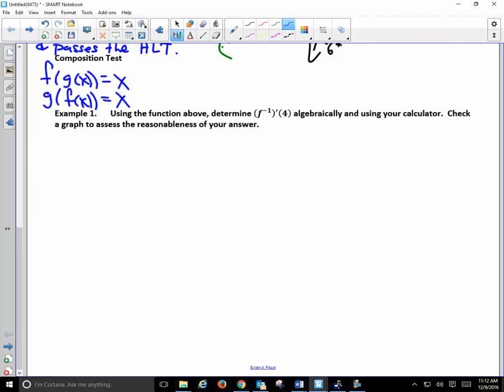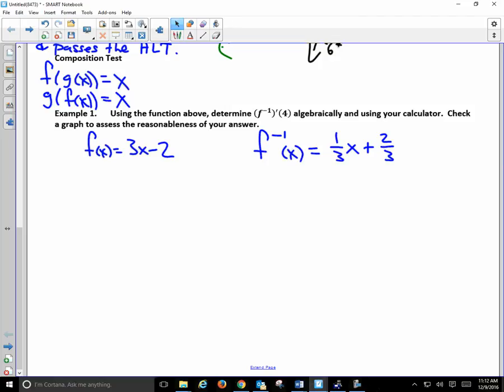So we're not going to do all the parts of the directions. I just wrote this yesterday for the first time, but we are going to do a little bit. It says, using the function above, determine f inverse prime of 4. So let's try to figure a few things out. We have f(x) = 3x - 2. And I have f inverse of x = (1/3)x + 2/3. If we were wondering the derivative of f, we would do f'(x) = 3. Does it matter that we're taking the derivative at 4? It always has a derivative of 3.